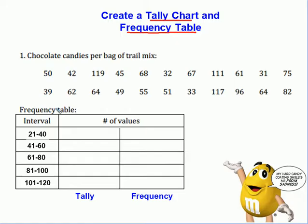So over here we have our frequency table. Here are our intervals. We have between 21 and 40, between 41 and 60, 61 and 80, and so on. So let's see what we've got. 50 means that we're going to put a tally mark here between 41 and 60 because that's where it will be.